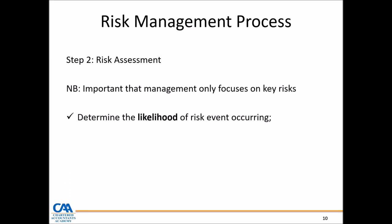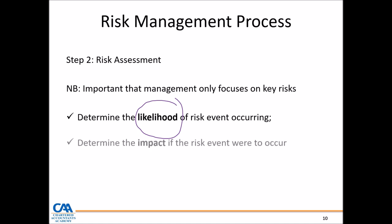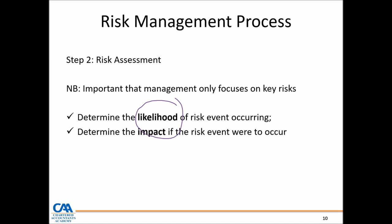Number one — determine the likelihood of the risk event occurring. What is the probability of it actually occurring? If the chance of occurring is remote, maybe it's not a risk you should worry about. Also, determine the impact of the risk event should it occur — what is the impact on the business? If the impact is minimal, maybe it's not a risk you should worry about. This criteria is what you can use in examination to identify key business risks, not to just write everything you think is a risk.